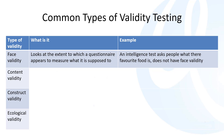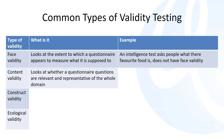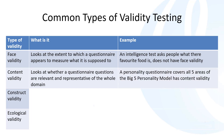The second type of validity is content validity, which looks at whether questionnaire questions are relevant and representative of the whole domain — in other words, are some questions missing key parts of the field of study? For example, a personality questionnaire covering all five areas of the Big Five personality model has content validity. If the questionnaire only covered four areas of the Big Five, we could argue it doesn't have content validity because not all the content is being covered.